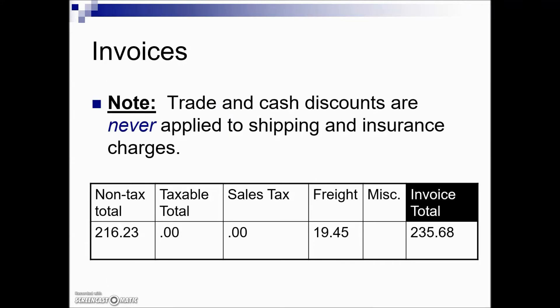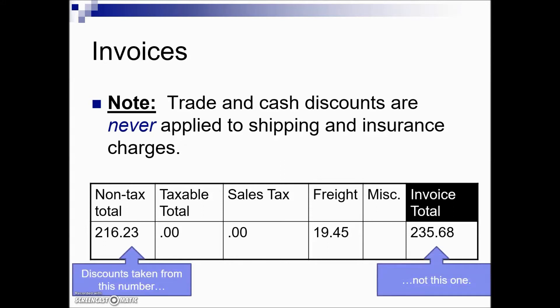One important note: trade and cash discounts, which will be discussed later in the chapter, are never applied to shipping and insurance charges. For this reason, shipping and insurance charges are often not included in the invoice total, so the purchaser must add them to find the total amount due. The non-tax total is the value used to calculate any discount, not the grand total or the invoice total.